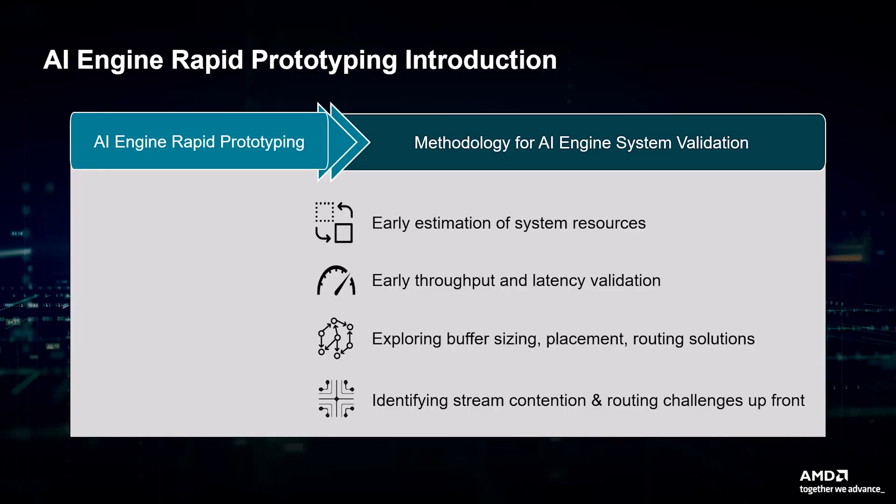The rapid prototyping of AI-Engine subsystems phase involves resource estimation, including identifying the tile counts, buffer usage, PLIO resources, and stream array traffic, as well as assessing the latency and throughput feasibility with early data flow simulation, prototype kernel coding, and initiation interval loop analysis.